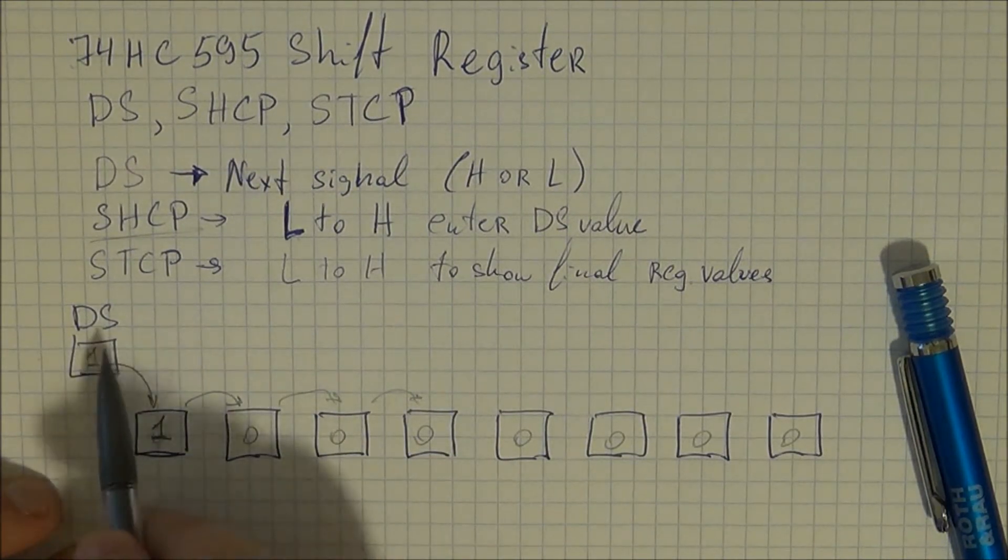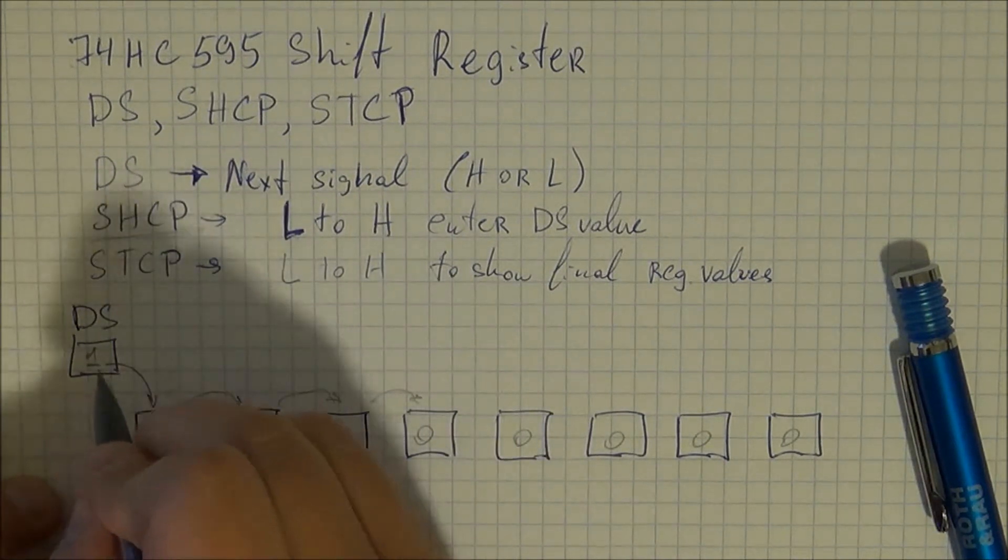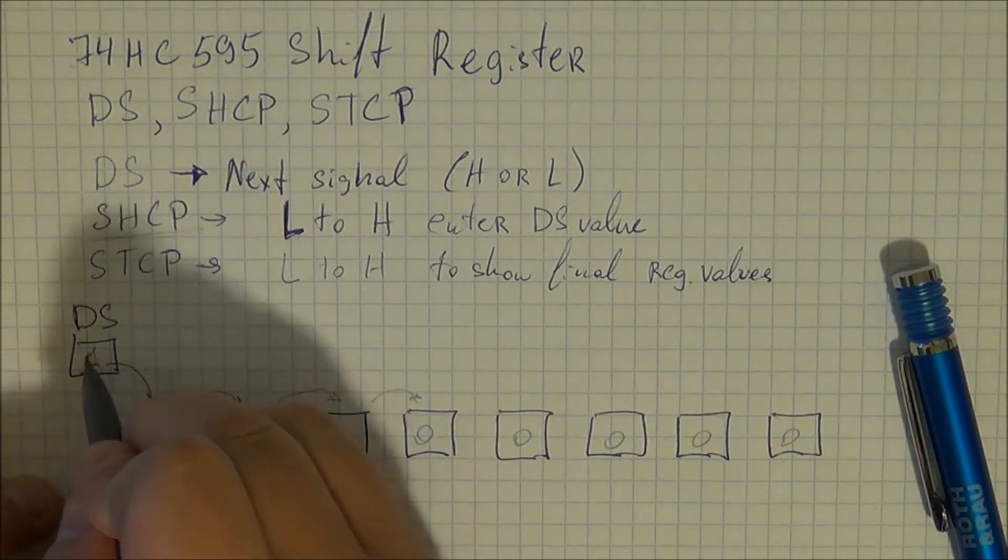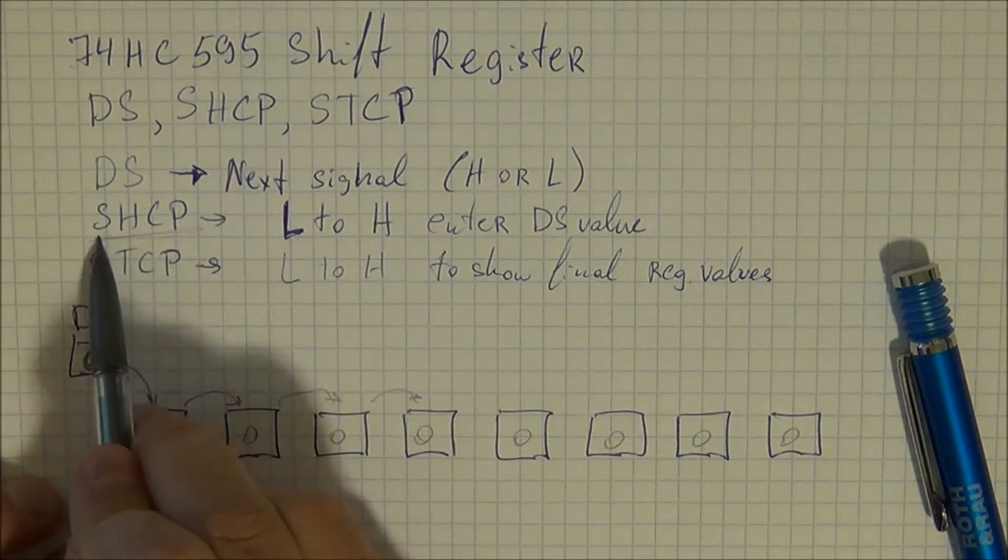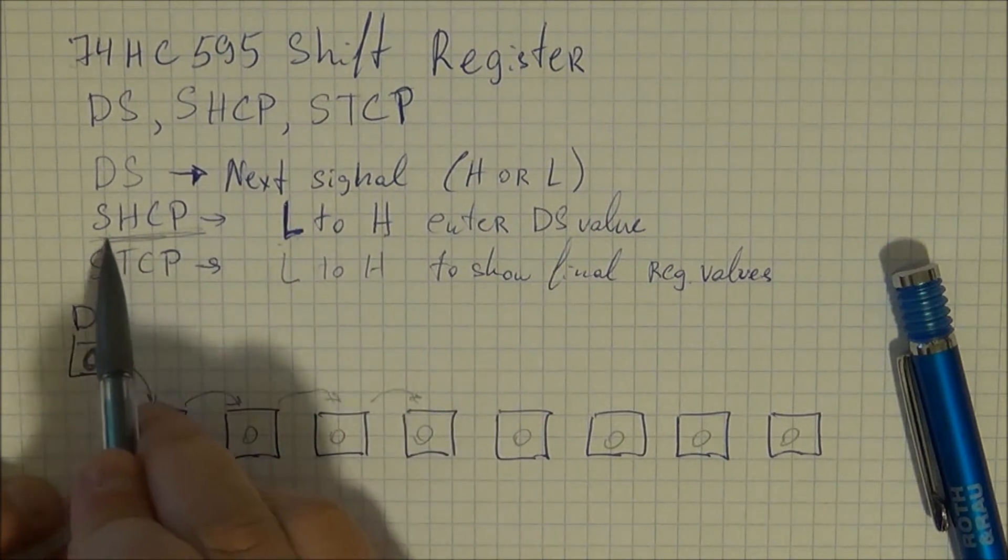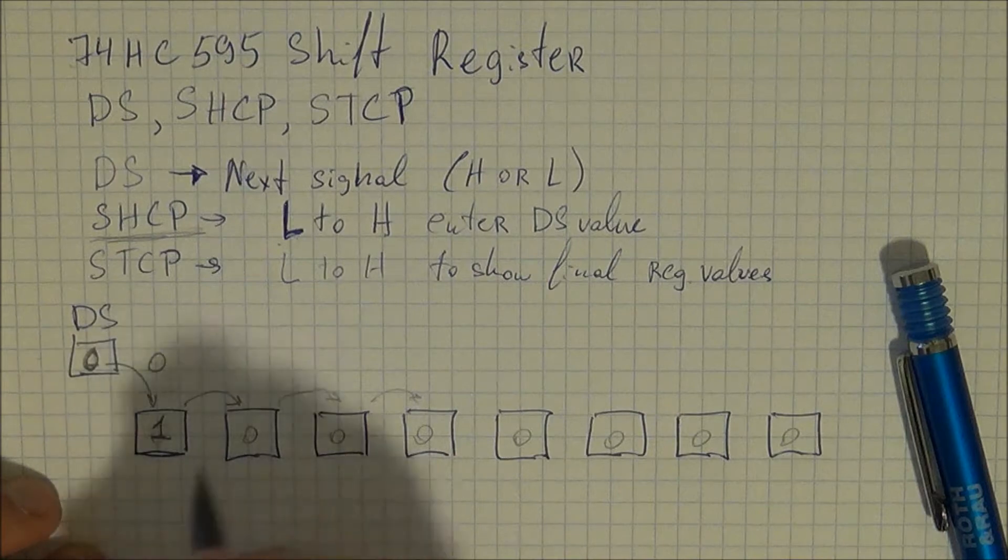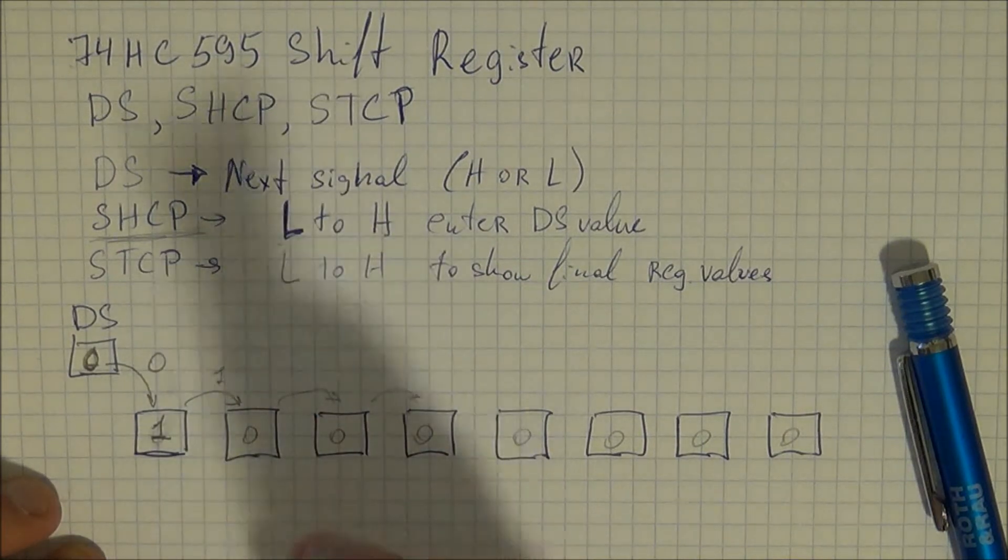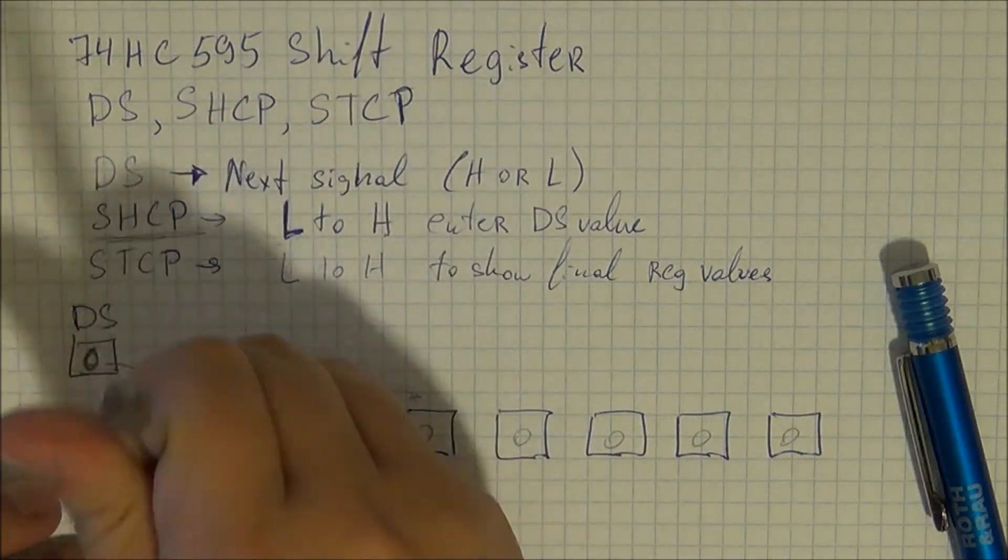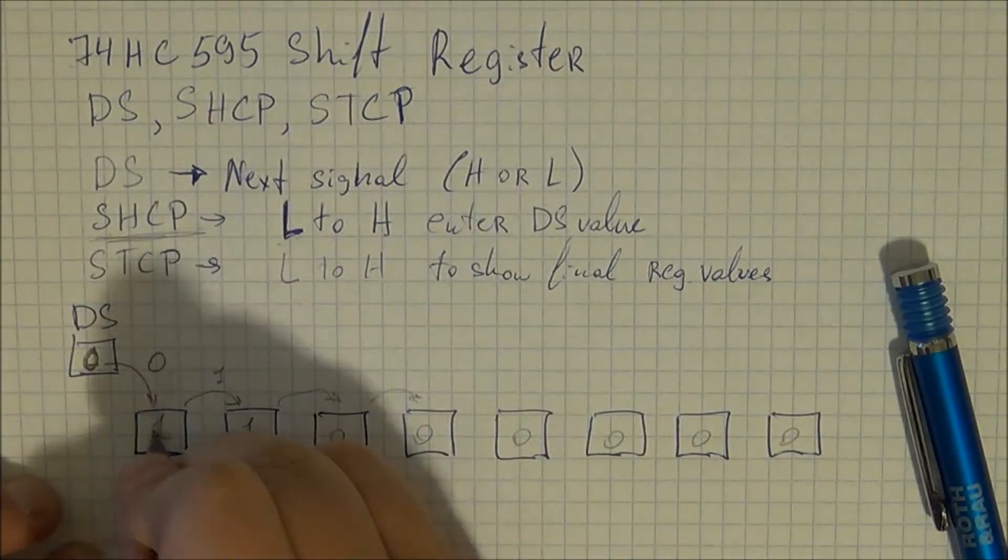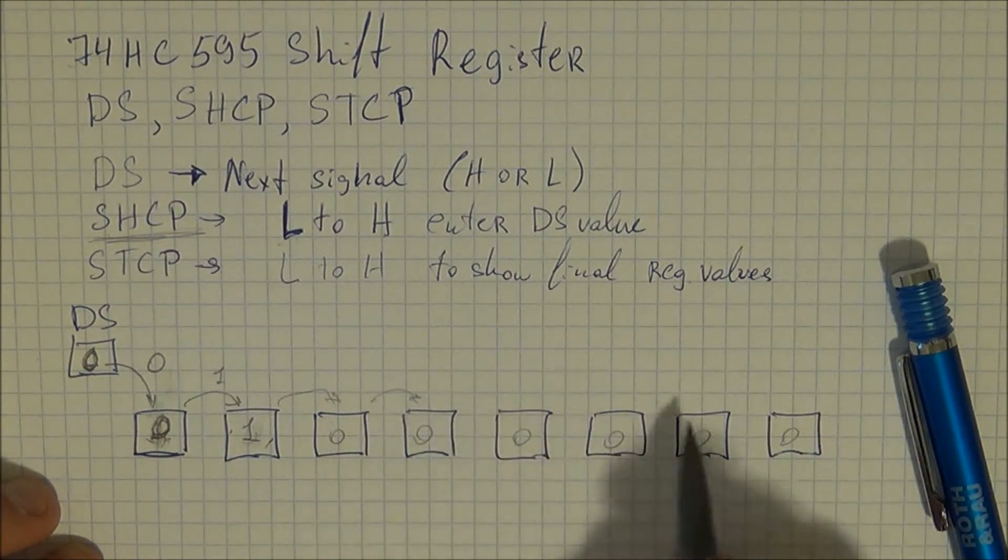So until you switch DS, obviously this is your Arduino pin so it's going to stay high. But let's say you change it to zero. So no changes yet. But once again, once you trigger this low to high SHCP pin, what's going to happen, you're going to shift this zero in here and you're going to shift this one by one space. So you're going to get your one and you're going to have your zero here and obviously the zeros shift over one by one.